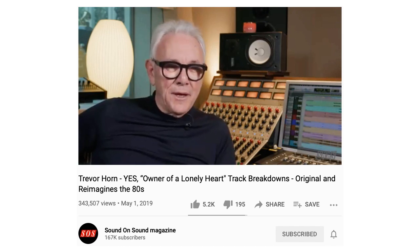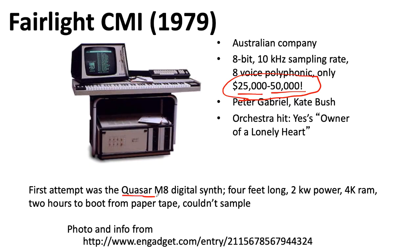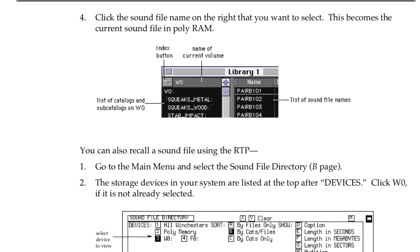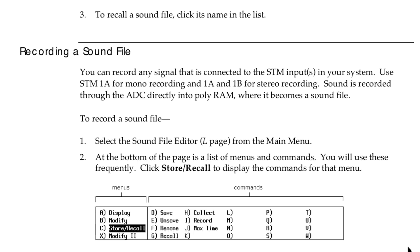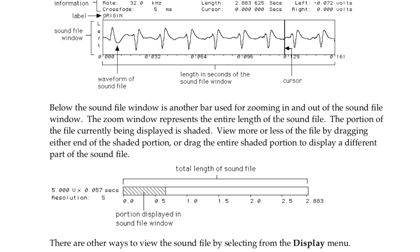There's a really classic orchestral hit sound that you'll hear in 'Owner of a Lonely Heart' by Yes. I also found a little tidbit about the Quasar M8 — I don't actually know anything about it, but the idea of something that boots from paper tape sounds really intriguing. The other super expensive sampler of the era would have been the Synclavier, which started out just having FM voices, kind of like the DX7, but later added a sampling option.